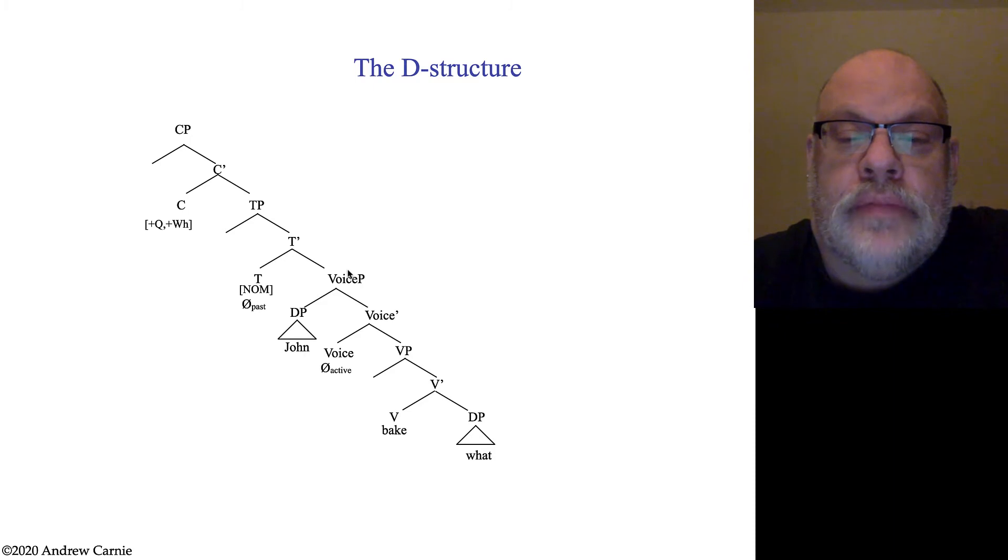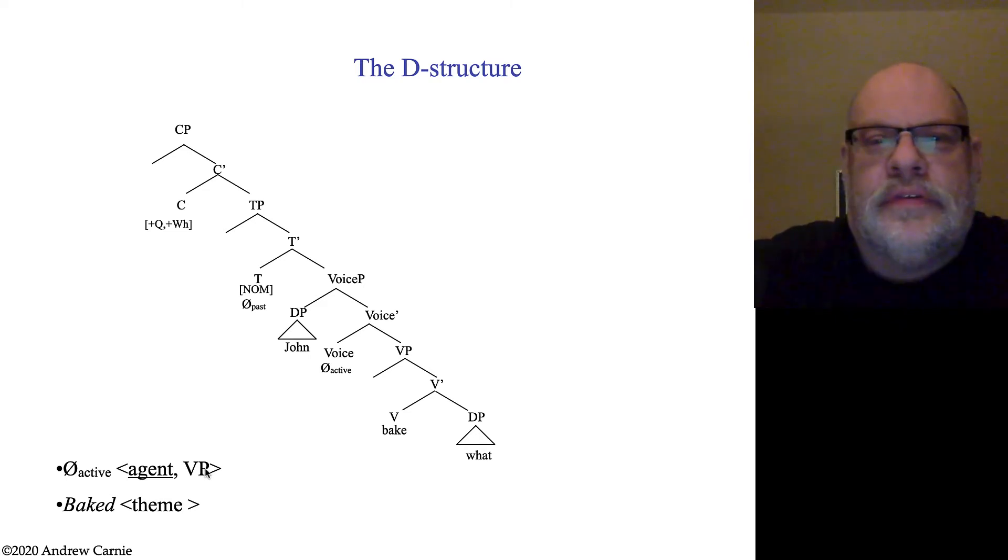We're using voice phrase here, slightly different than we have previous to the last unit, where we're introducing agents in the specifier of an active voice phrase, and we're introducing themes in the normal place as the complement to the verb. So, we have here the Theta grids for these two items. We have active voice, which introduces the agent, and it takes as a complement the verb phrase right here. This notation I'm using here is a little bit of an abbreviation of a Theta grid. Instead of using columns, I'm just using this bracketed notation. But it says the same thing as the columns of Theta grids in the previous units.